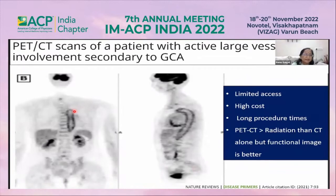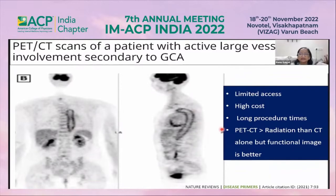This PET scan is compared with liver uptake. Increased uptake is seen in the thoracic aorta. This PET-CT scan shows large vessel giant cell arteritis. PET-CT has limited access, high cost, and long procedure time, and delivers more radiation than CT alone, though the functional image quality is better.